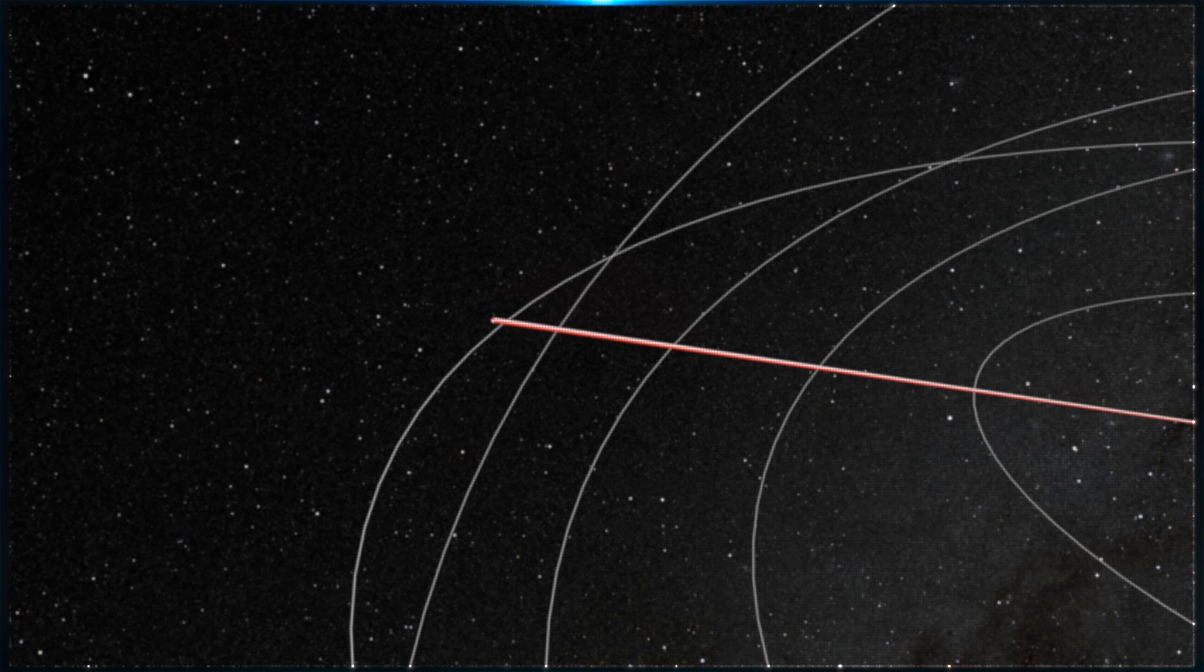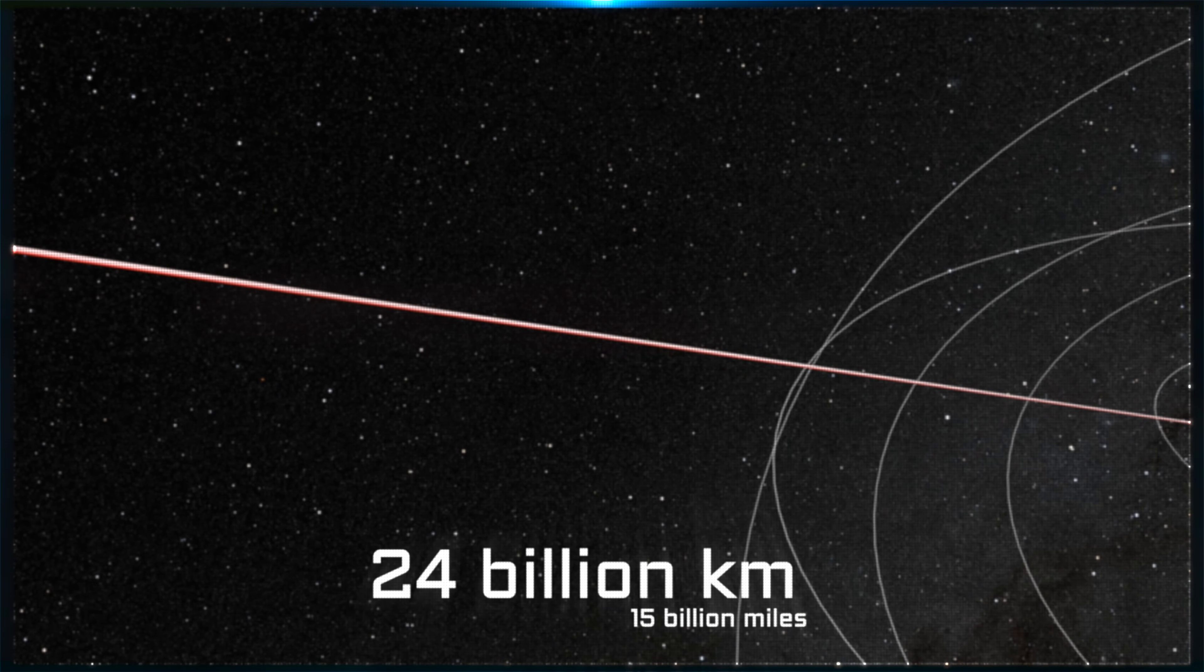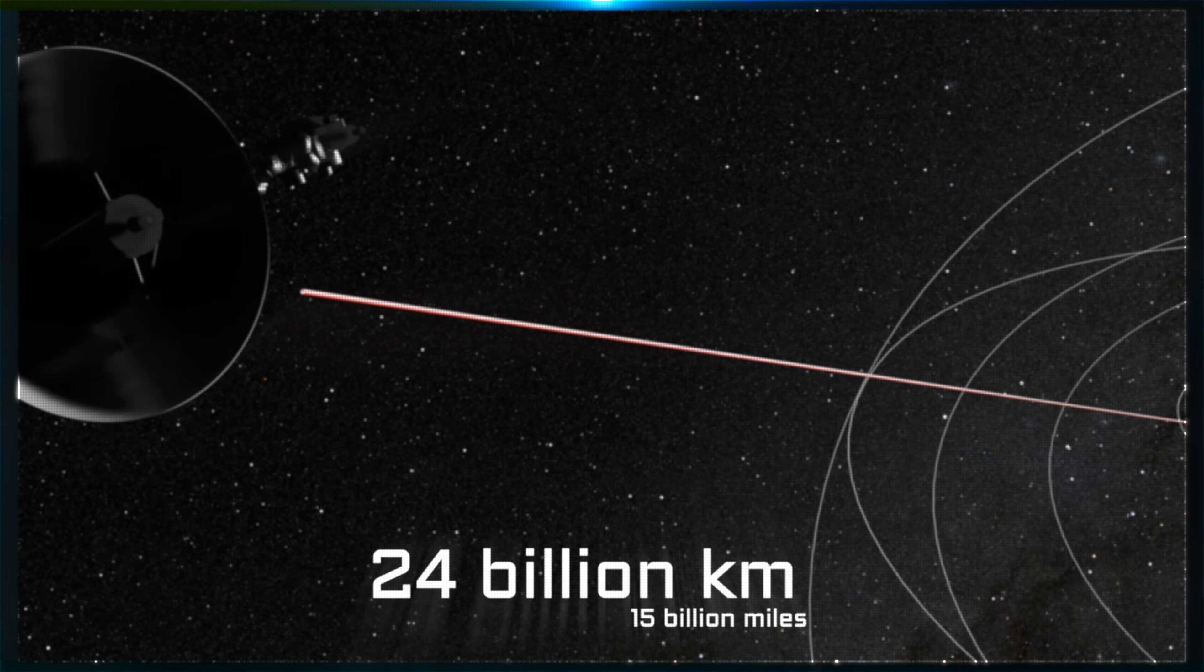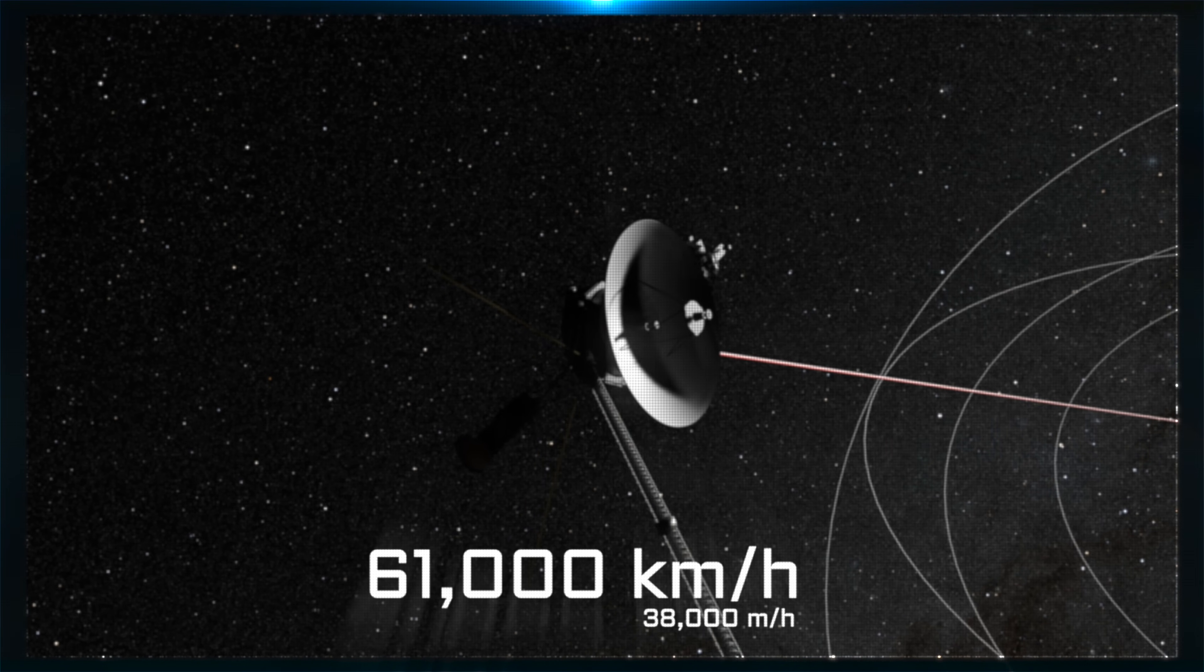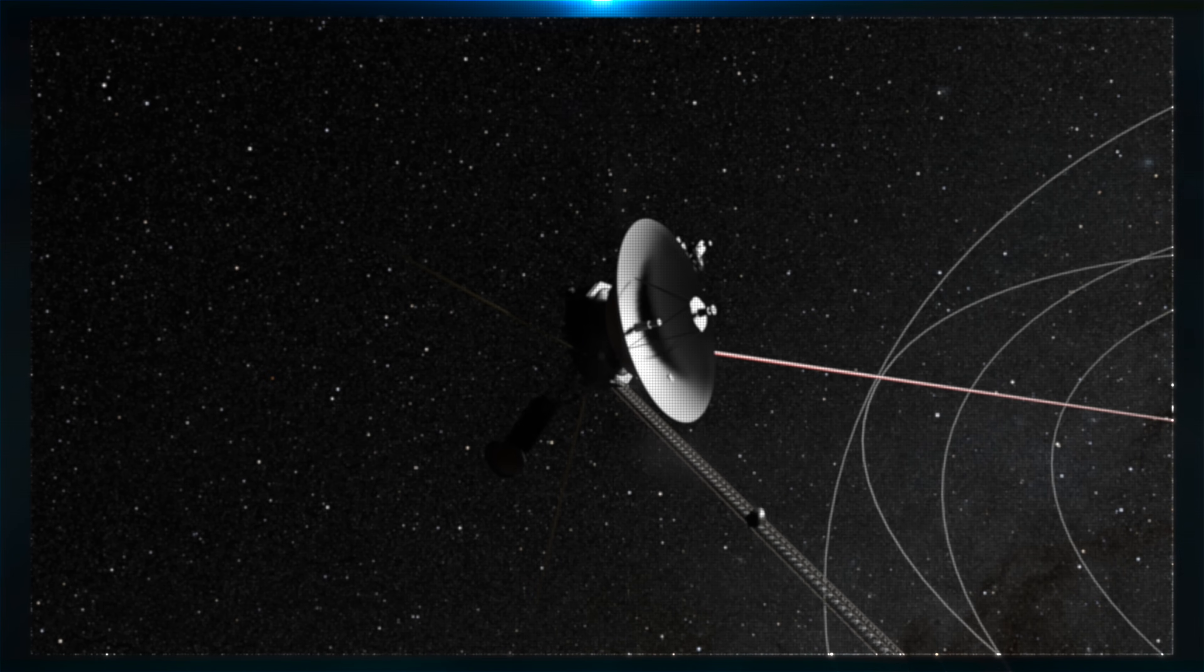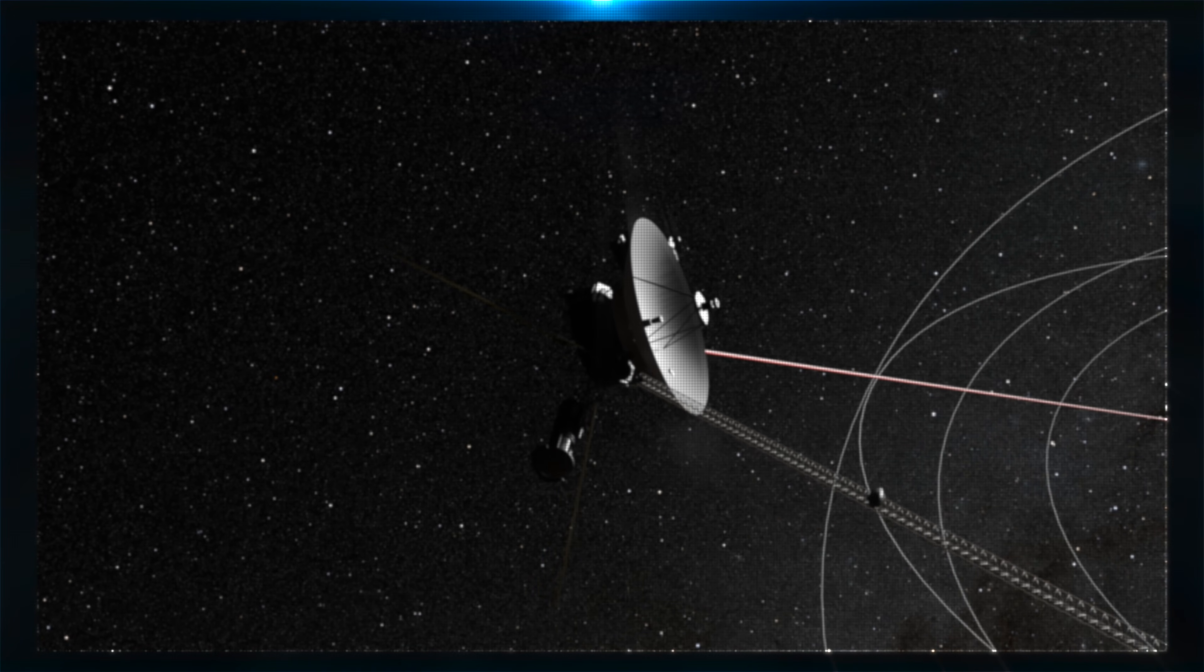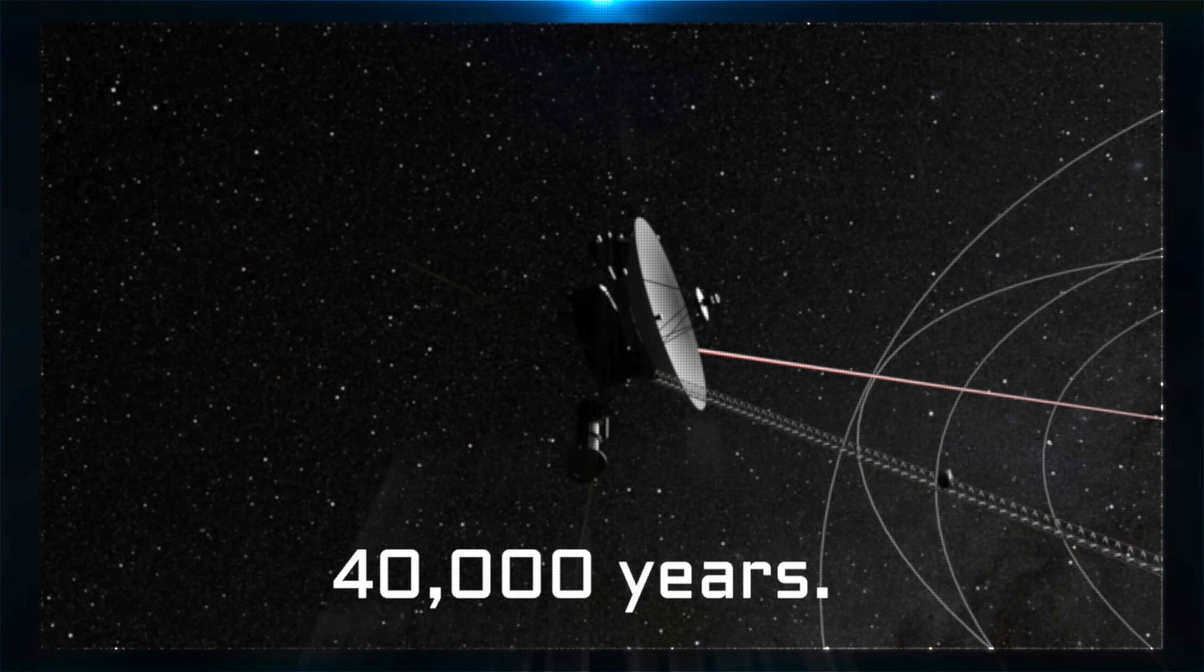As of April 2024, it is located at a distance from Earth of 24 billion kilometers, traveling at 61,000 kilometers an hour. At this speed, it will reach the next star system in about 40,000 years.